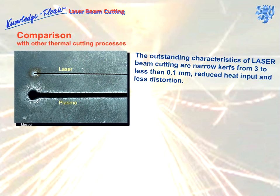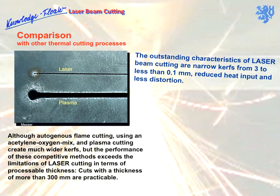The outstanding characteristics of laser cutting are narrow kerfs from 3 to less than 0.1 millimetres. As a consequence, reduced heat input and minimal distortions are attainable. The autogenous flame cutting process using oxy-acetylene, or the plasma cutting method, creates significantly wider kerfs. Currently, these competitive methods show the limitations of laser cutting regarding processable thickness, but research is evolving quickly and thicker materials will soon become unproblematic to process.